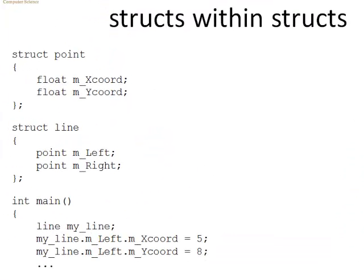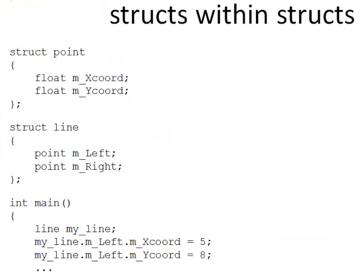Structs within structs. Well, of course you can use the type, once you've defined a type, say point here, you can use that in another type. So, I can declare line as a type. It follows the syntax. Struct line. Open and close curly braces. Don't forget the semicolon. And then it has member variables of type point.